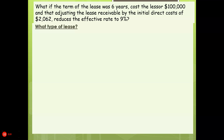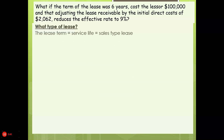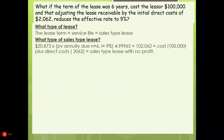Scenario 2: the lease term is six years, cost the lessor $100,000, and adjusting the lease receivable by the initial direct costs of $2,062 reduces the effective rate to 9%. What type of lease? Since the lease term equals the service life, it's a sales-type lease. Is it with or without profit? The net present value of the lease payments equals the cost plus the direct cost, so this is a sales-type lease with no profit.